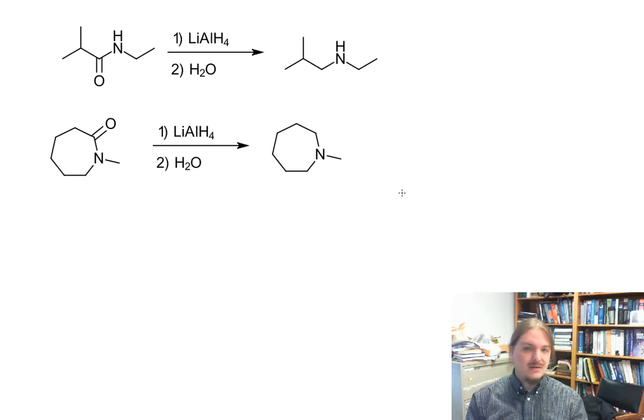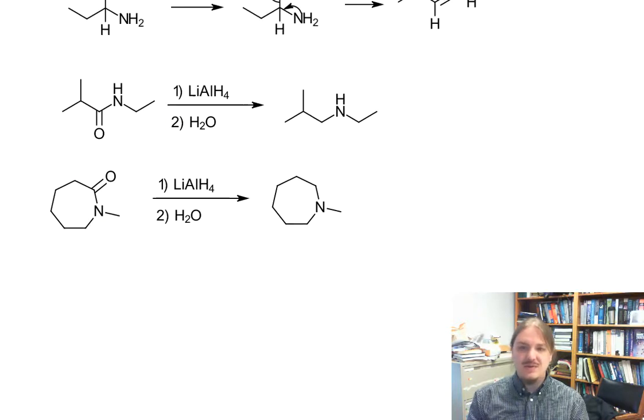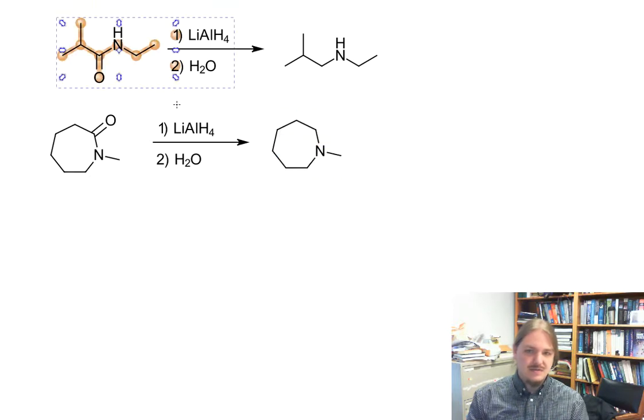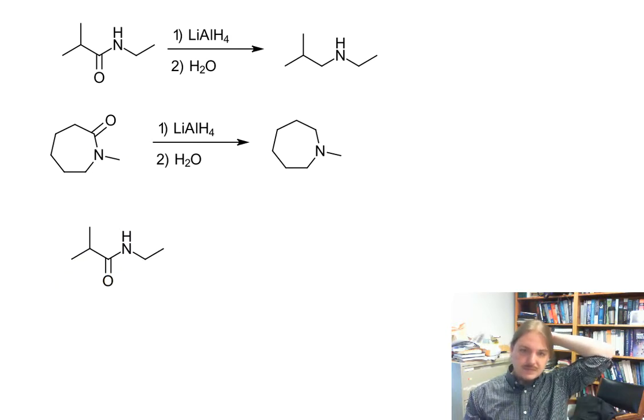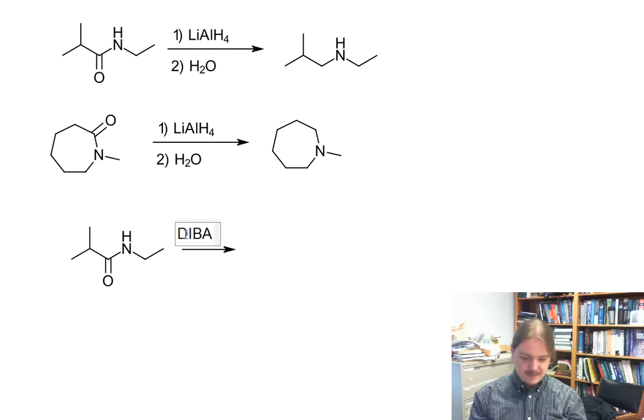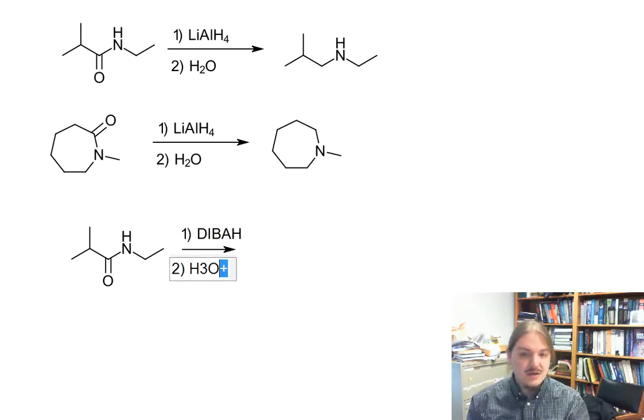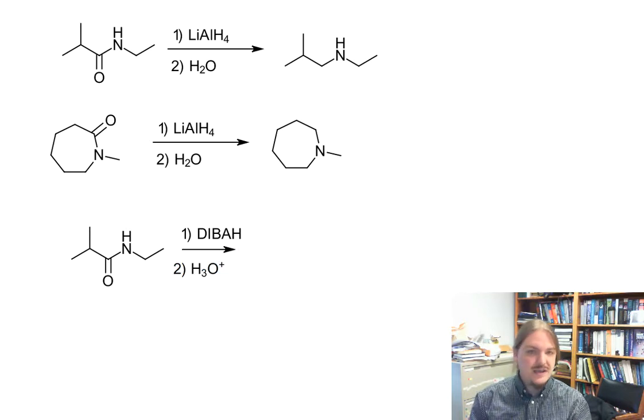Now, that isn't to say that there aren't ways to make amides into other functional groups by reduction. So if we use diisobutyl aluminum hydride (DIBAH) followed by acidic aqueous workup, we can, in fact, reduce amides to aldehydes.